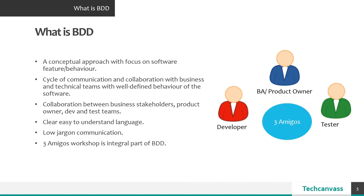BDD is all about collaboration and communication. The main focus is on the behavior of the software — what are the desired features to be built? The three amigos play a critical part in BDD process implementation. First is the BA or product owner who is close to the business. Second is the developer who contributes technical knowledge, and the tester who knows how to break the system. All three sit together and collaboratively decide what needs to be implemented, then put it down in easy-to-understand language with no jargon.